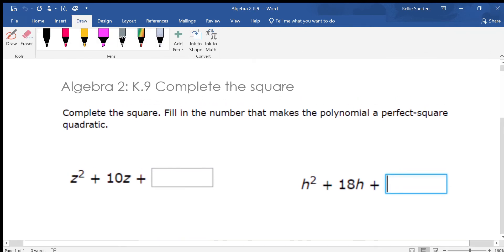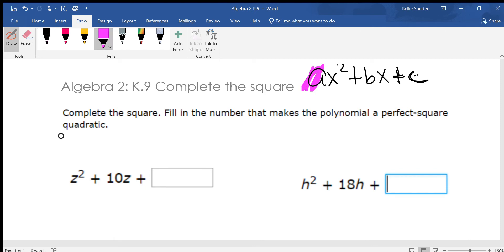We have AX squared plus BX plus C. You really need to know what A, B, and C mean. So this would be your A, which would be 1. This would be B. And then we are going to be looking for a C.